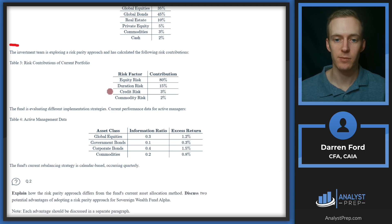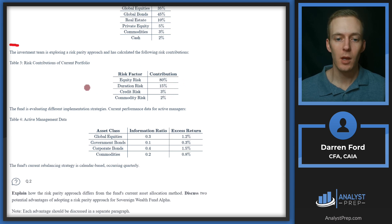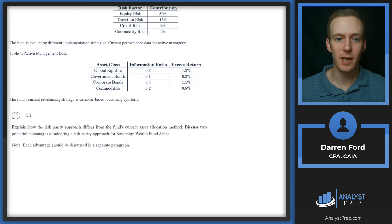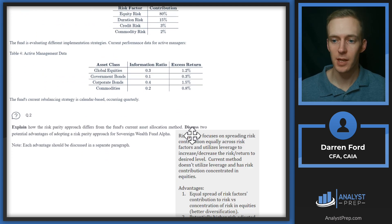We've got four risk factors: equity risk, duration risk, credit risk, and commodity risk. We can see those contributions are 80%, 15%, 3%, and 2%. So let's pull in our answer on risk parity.